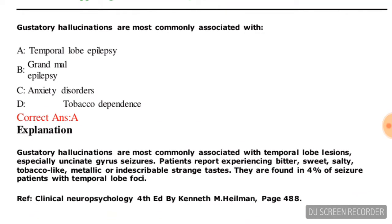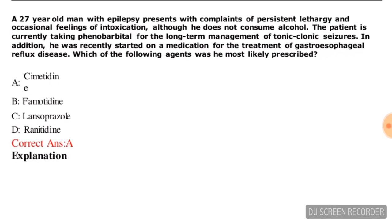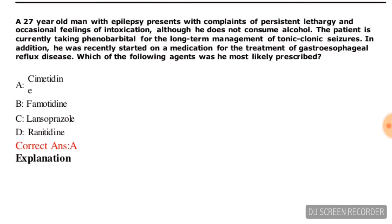Next question: gustatory hallucinations are most commonly associated with which of the following? Options are temporal lobe epilepsy, grand mal epilepsy, anxiety disorder, or tobacco dependence. The correct answer is option A — temporal lobe epilepsy.